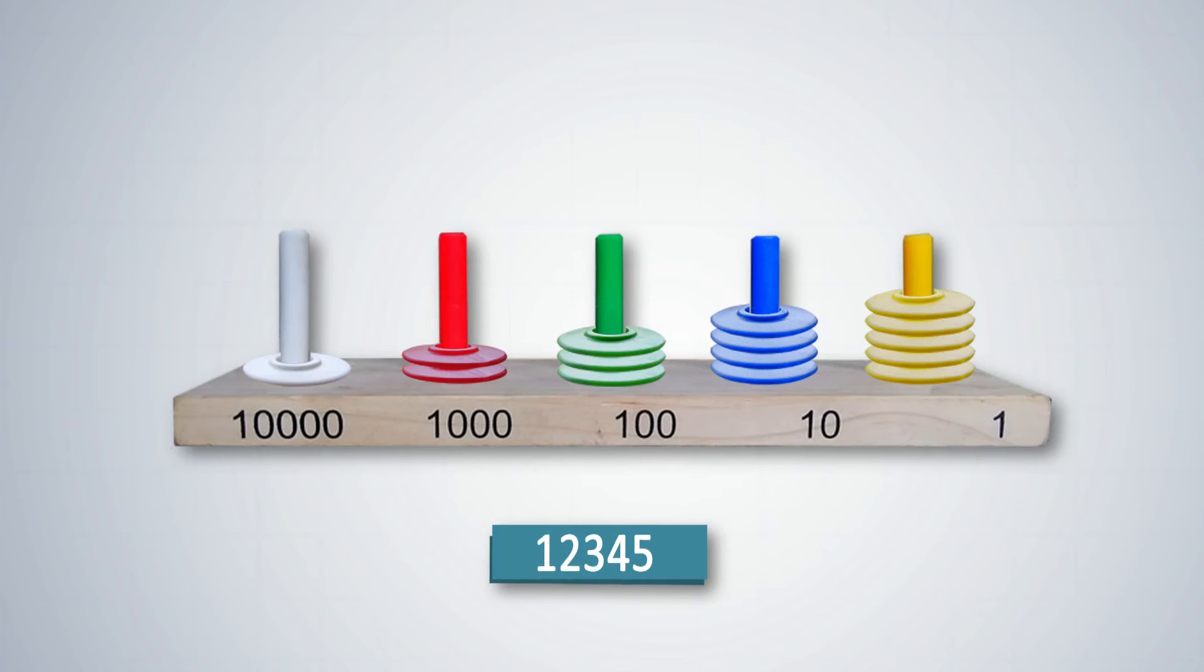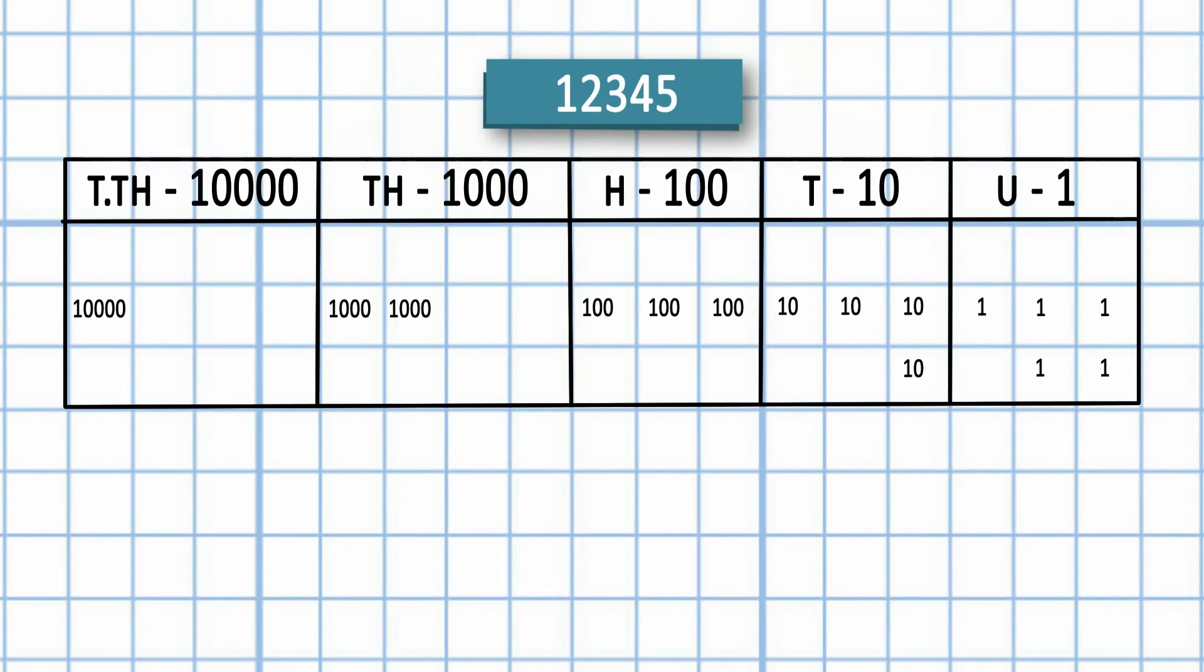After students have understood the concept using different teaching aids, it is now time to practice on the grid. The different columns on the grid show how many 1s, 10s, 100s, 1000s, and 10,000s are there in any number.